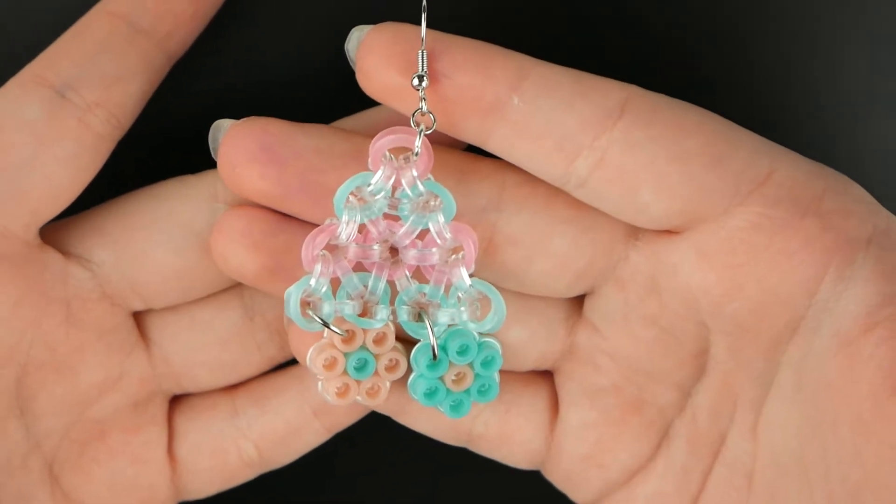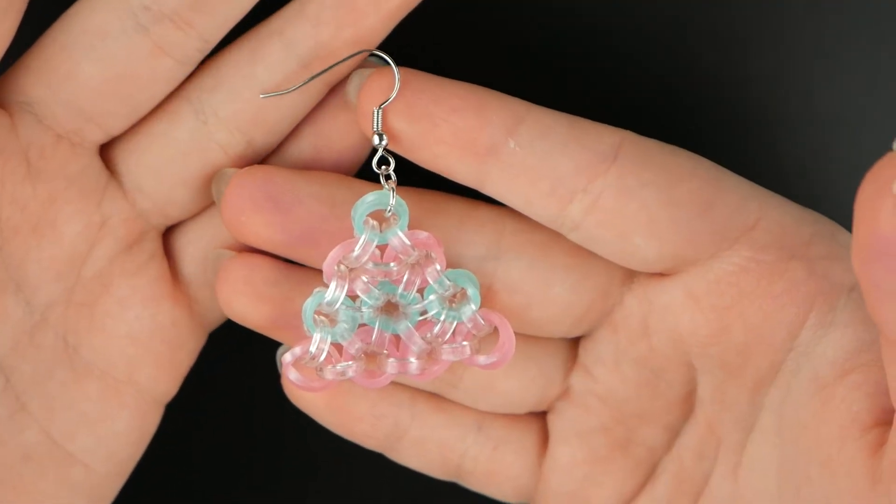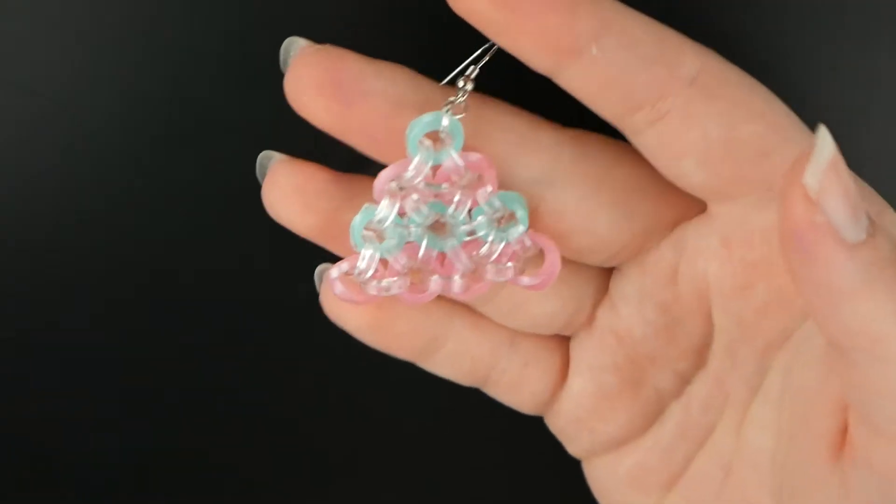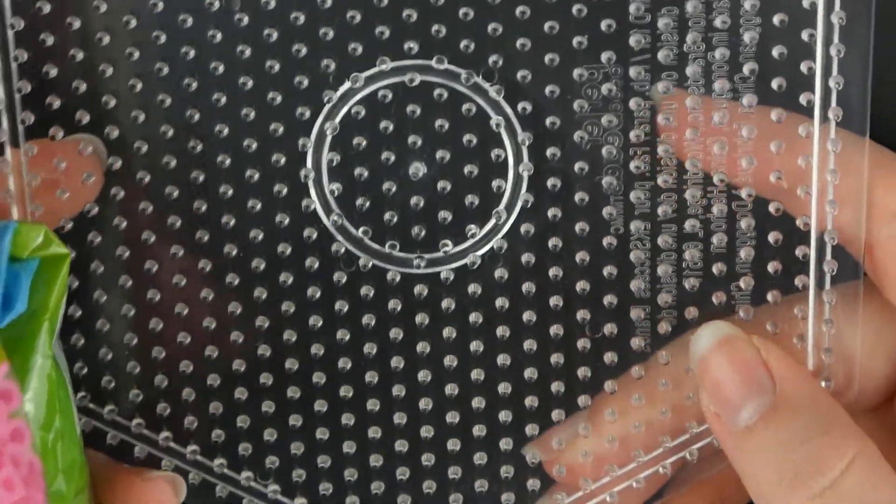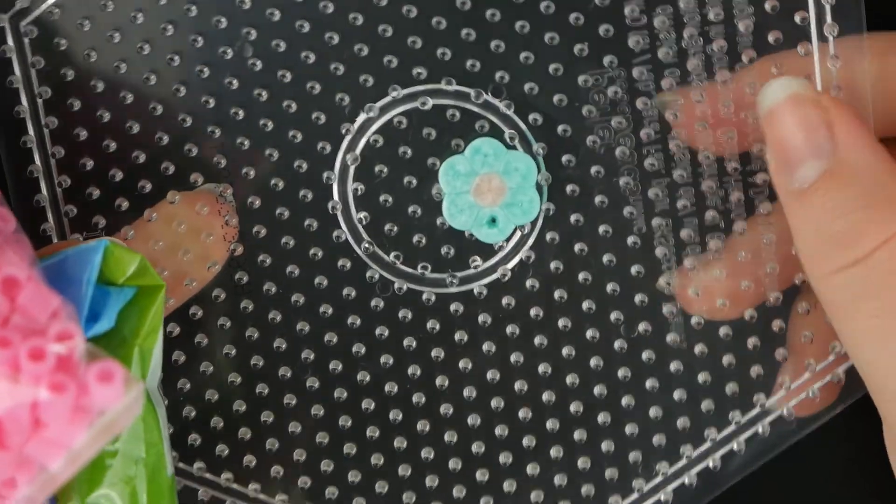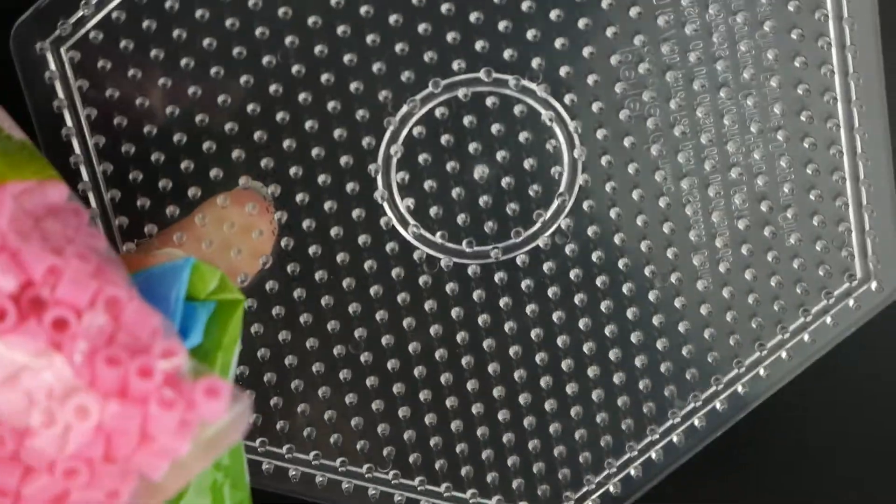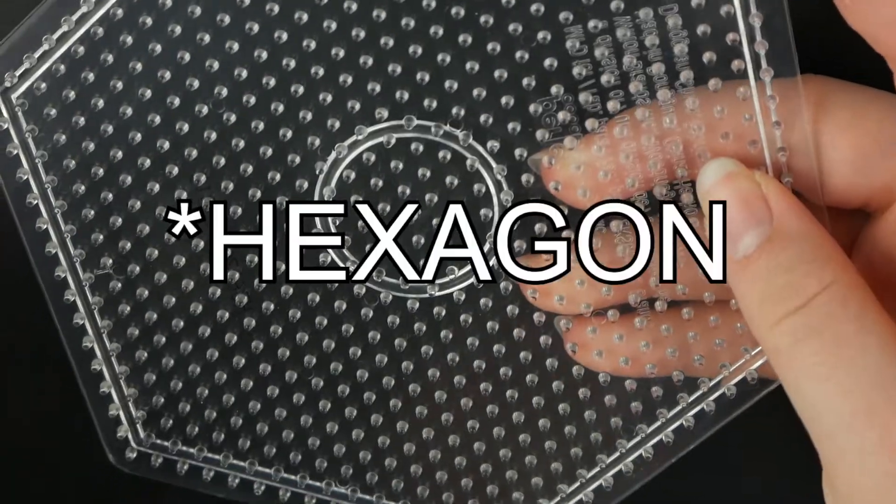Without further ado, let's just get right into the tutorial. To make this earring design, you will need one of these earrings with the hook attached. As I said, I have a different video showing you guys how to do that. Then you will need Perler beads as well as a pegboard that can make the flower shape.